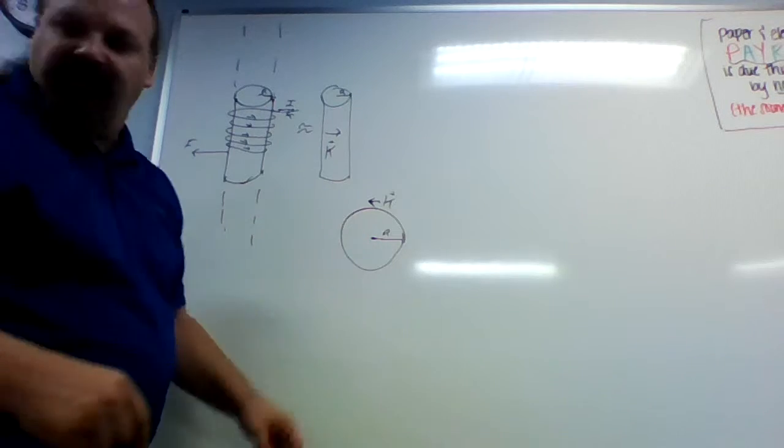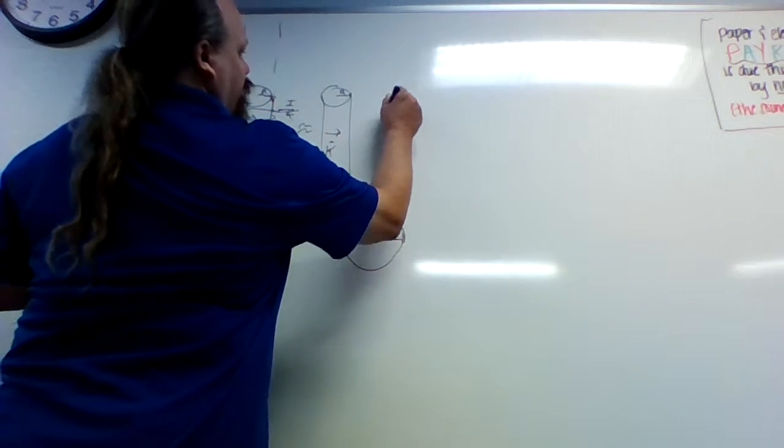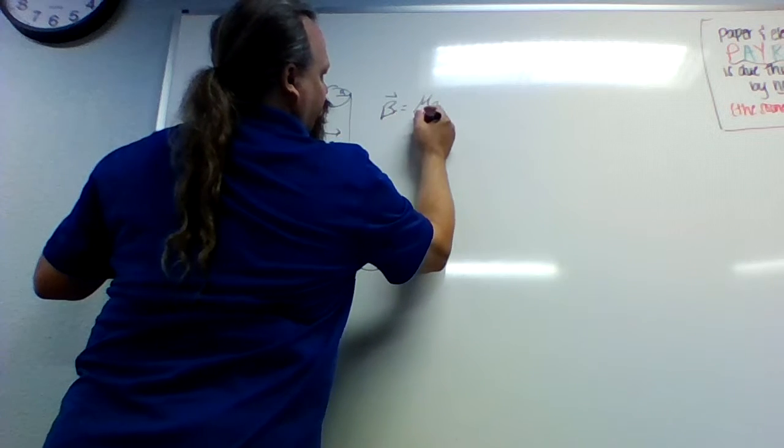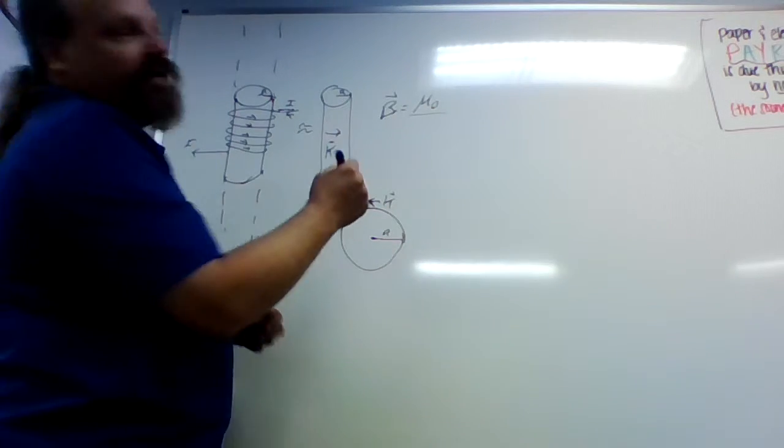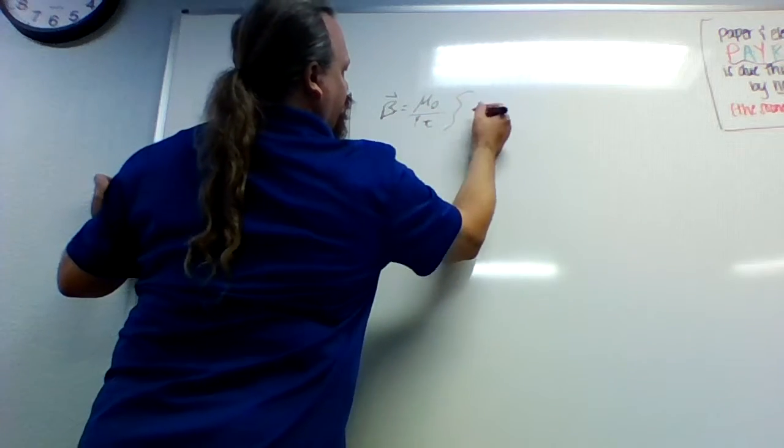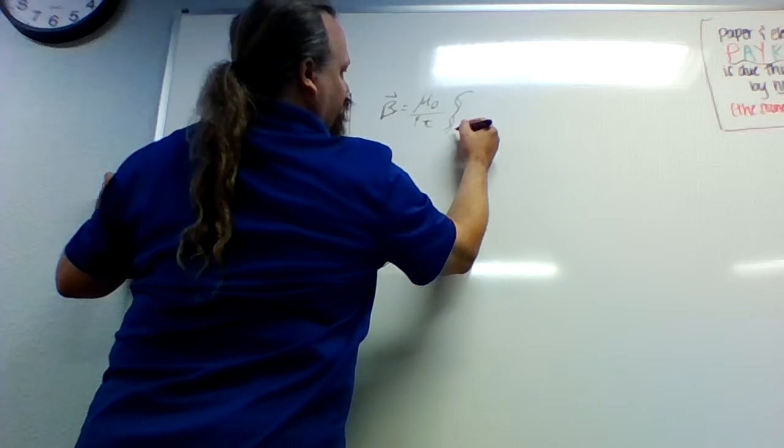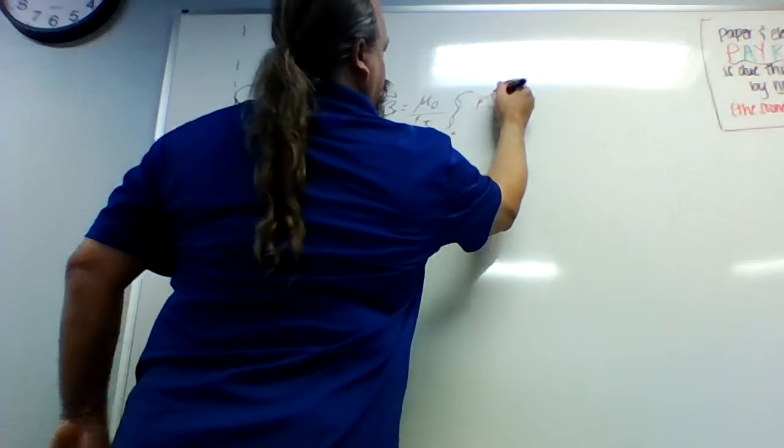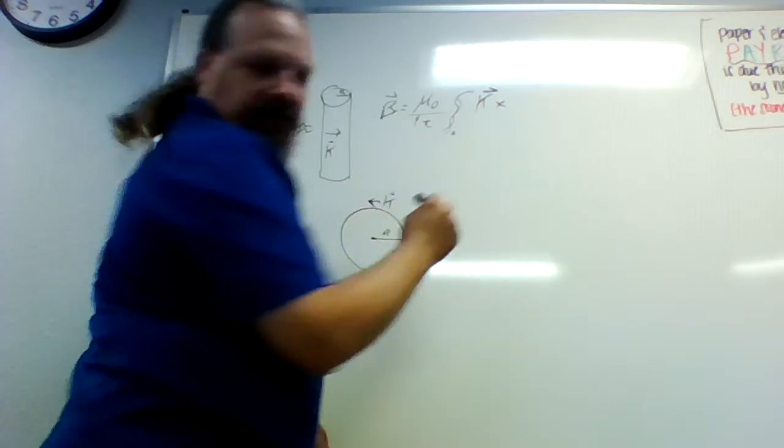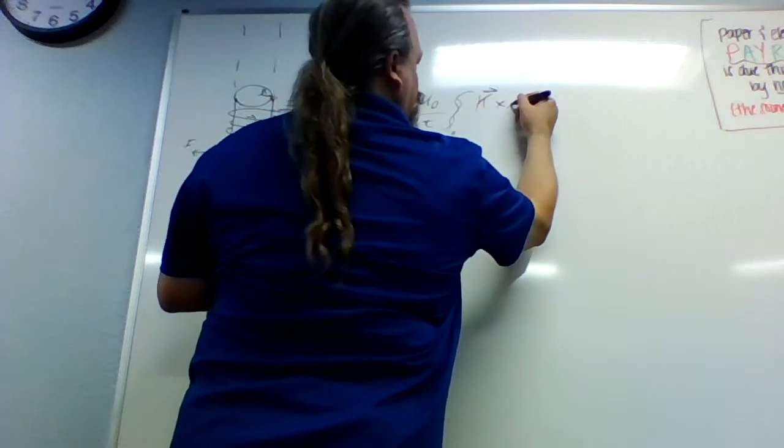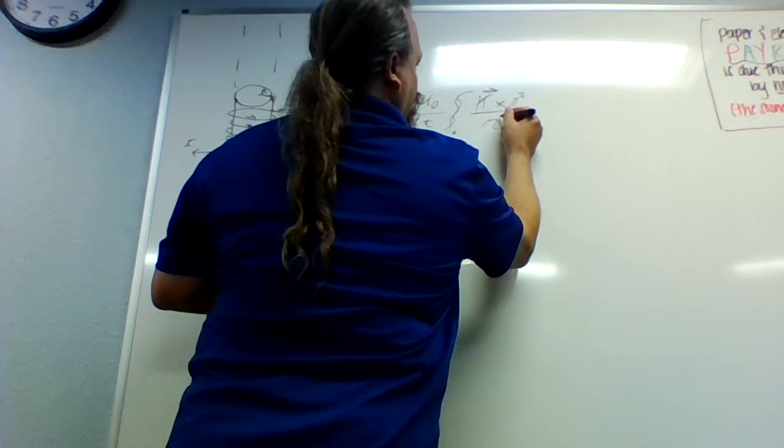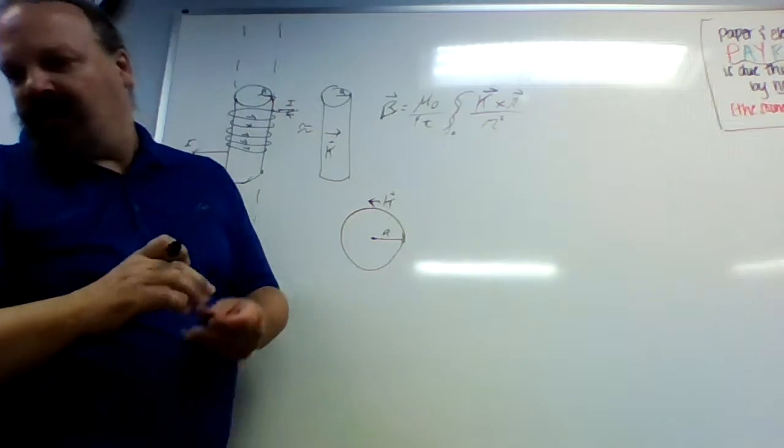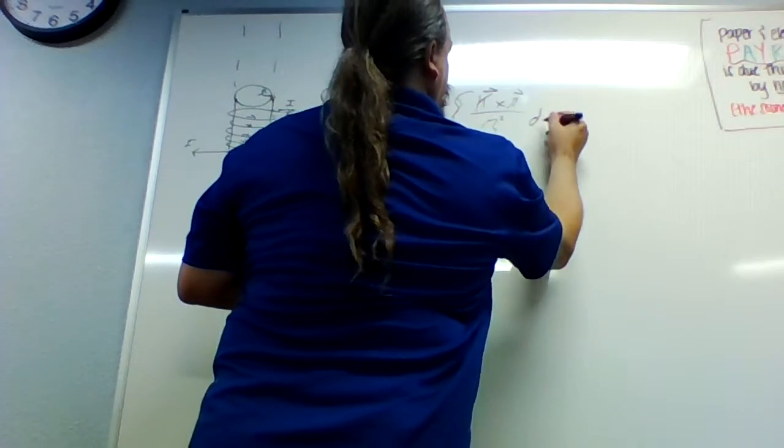So to start off with, of course, our B in the Biot-Savart is mu naught over 4 pi times the integral of the area of the current of K across r hat squared, K cross r, the direction of r hat over r squared dA.